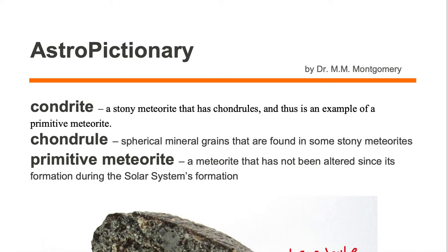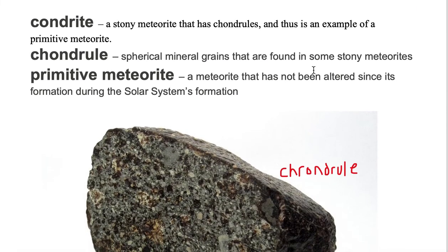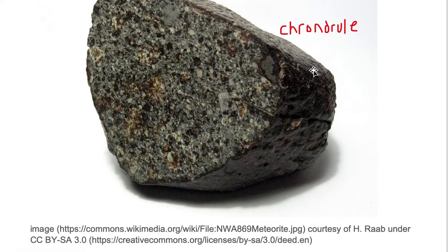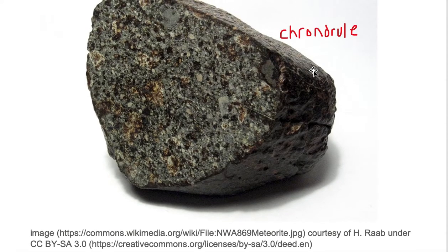A chondrite is a stony meteorite that has chondrules, and thus is an example of a primitive meteorite. Here is an example of a chondrite meteorite. This chondrite meteorite has chondrules in it.